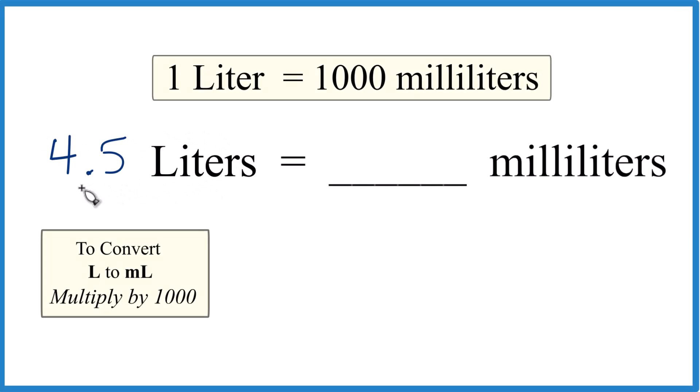Okay, so let's convert 4.5 liters to milliliters. Here's how you do it. We know that one liter equals a thousand milliliters. That's our conversion factor.